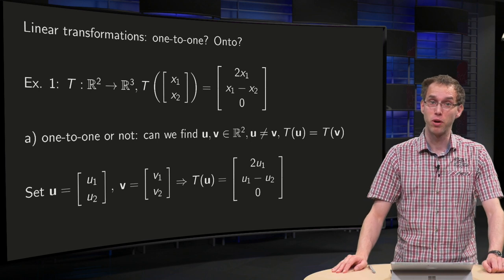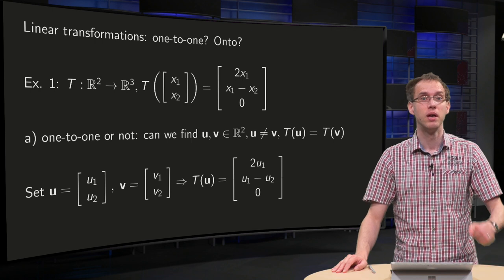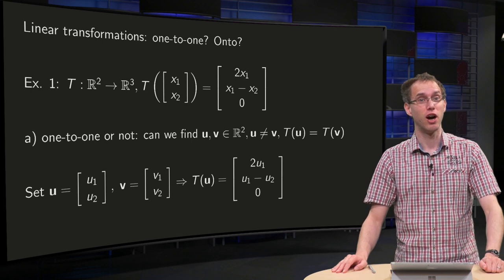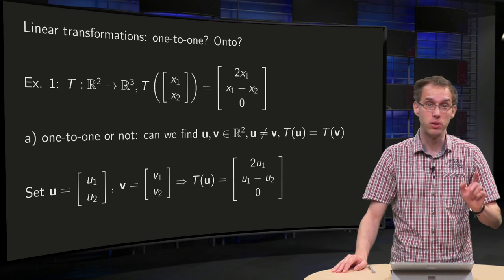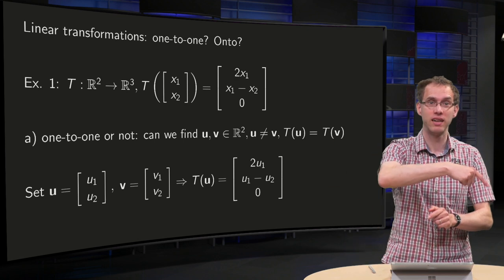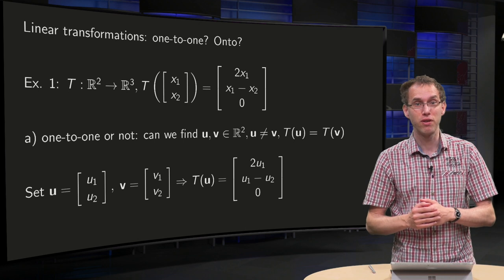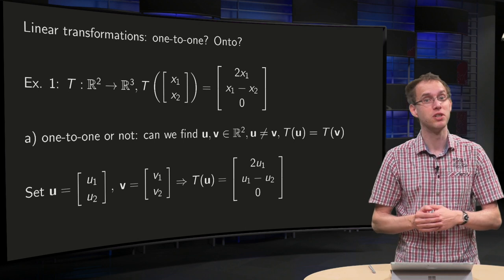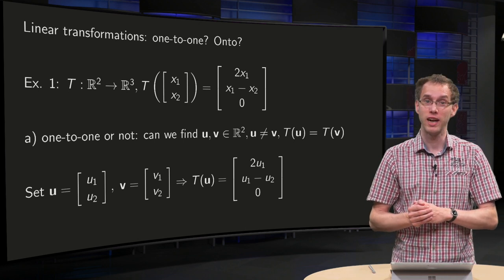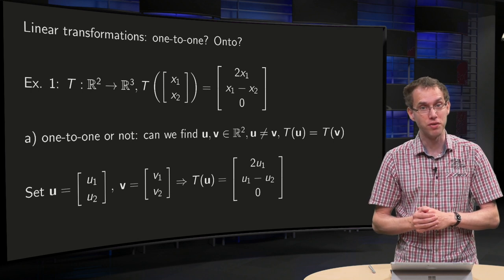Reasoning about the concepts of one-to-one and onto is difficult because you have to start the arguments in the codomain, not in the domain, and then look back. It requires some examples to get the feeling for these rather abstract concepts, so let's take a look at two explicit small examples in this video.